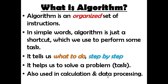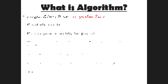To review: an algorithm is an organized set of instructions — a shortcut or recipe used to perform a task. It tells us two things: what to do, and step by step how to do it. It helps solve problems, which in computing means a general or routine task. Algorithms can be written in any language, though the standard form uses English, with one instruction per step.